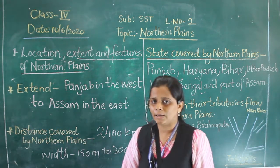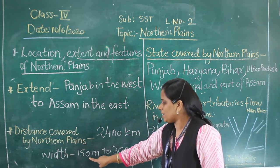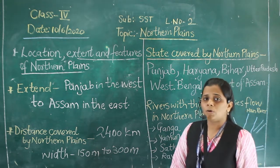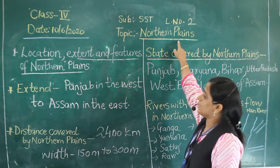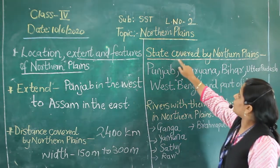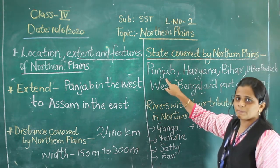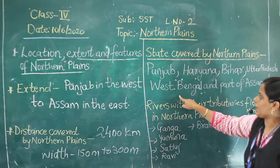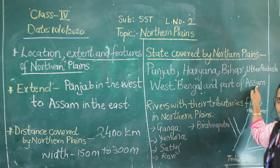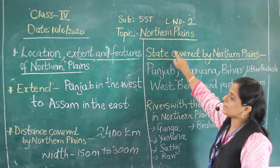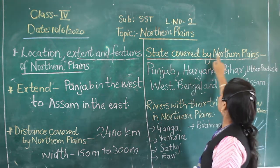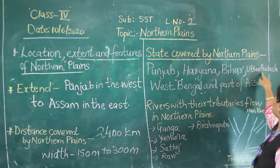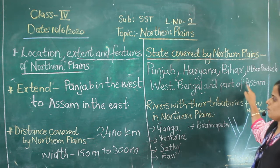The width of the northern plains is 150 km to 300 km. Now we will talk about the states covered by the northern plains. The states covered by the northern plains are Punjab, Haryana, Bihar, Uttar Pradesh, West Bengal, and the part of Assam.